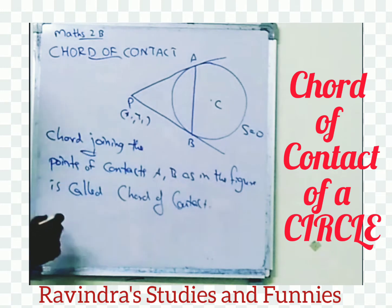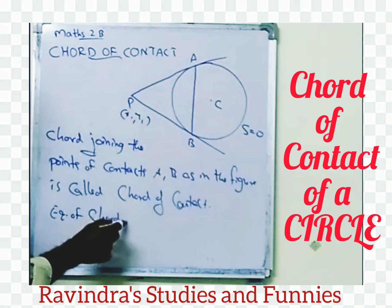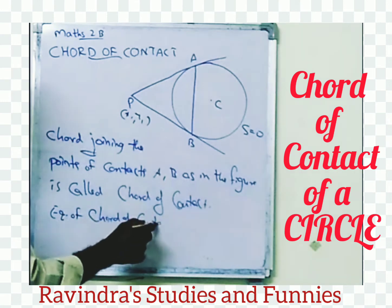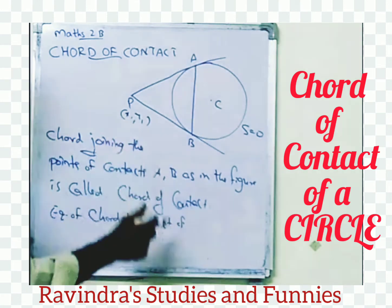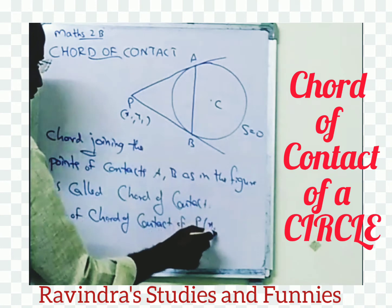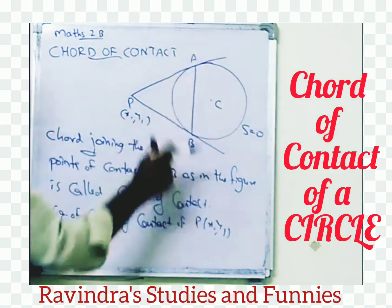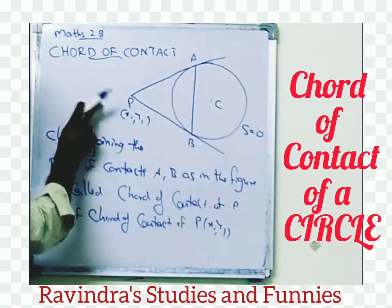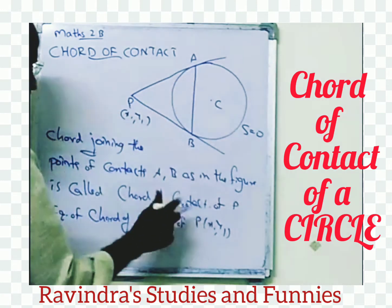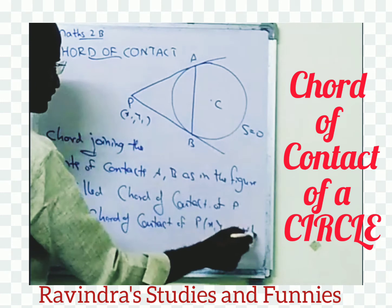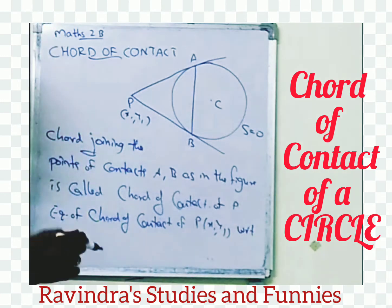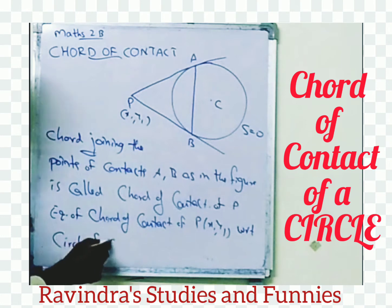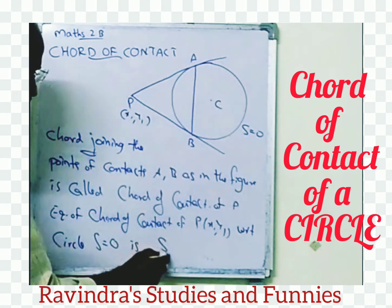There is a formula for this — how to find the equation of chord of contact of point P(x1, y1) for AB. The equation of chord of contact of P with respect to circle s equal to 0 is s1 equal to 0.